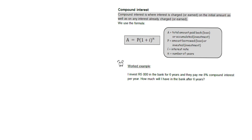Let's use this formula on a question. If you invest 5,000 rand in a bank for six years and get paid 8% compound interest, how much will you have after six years? Pause the video, try it in your books, and then we'll go over it.